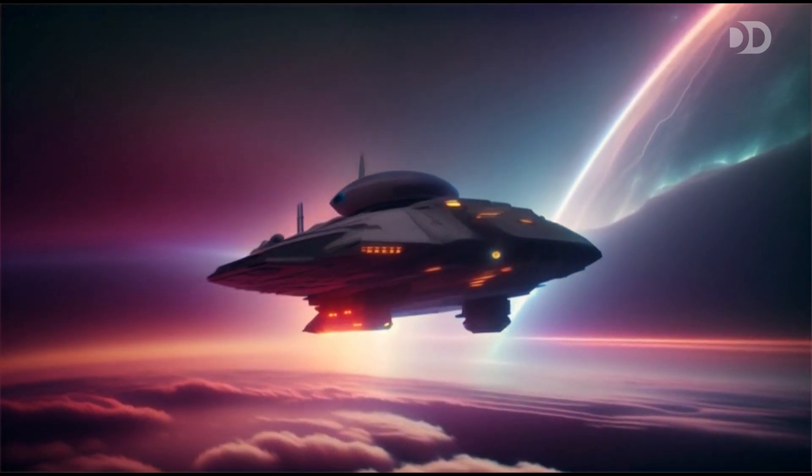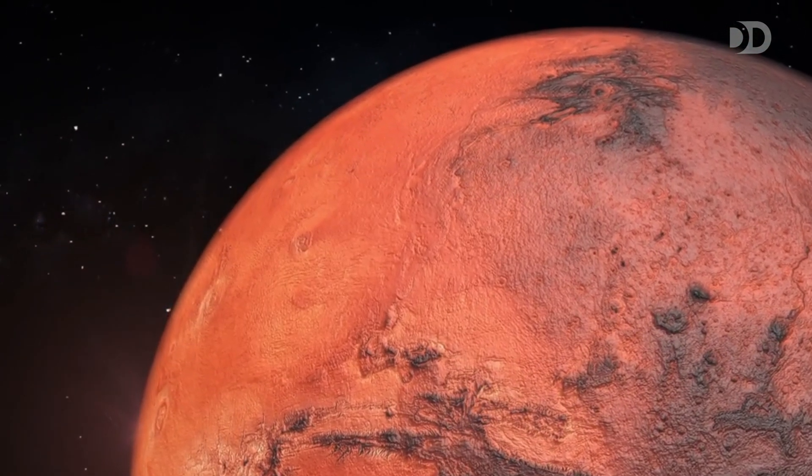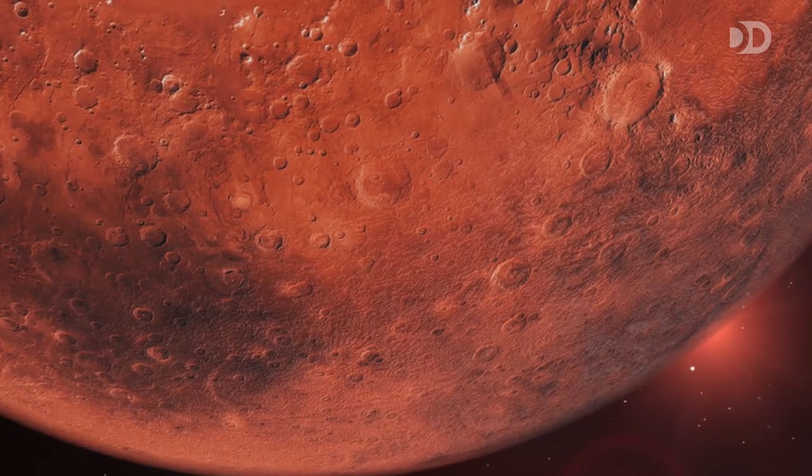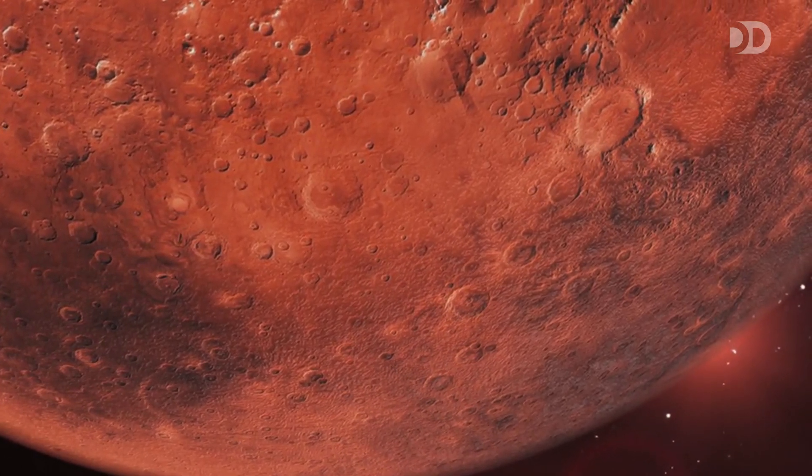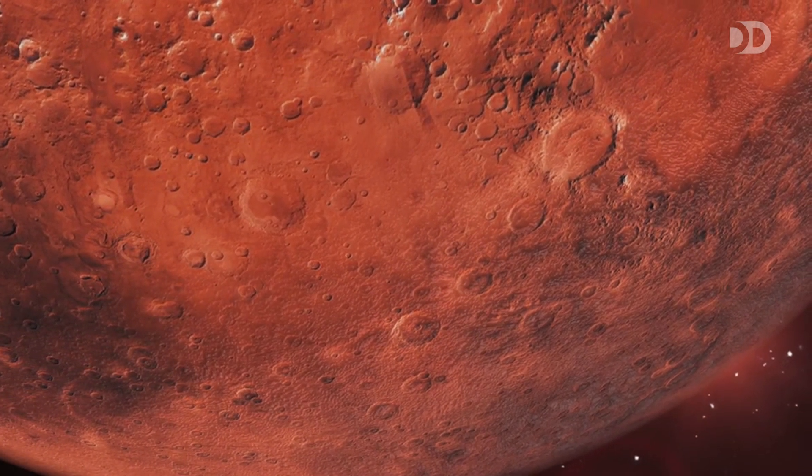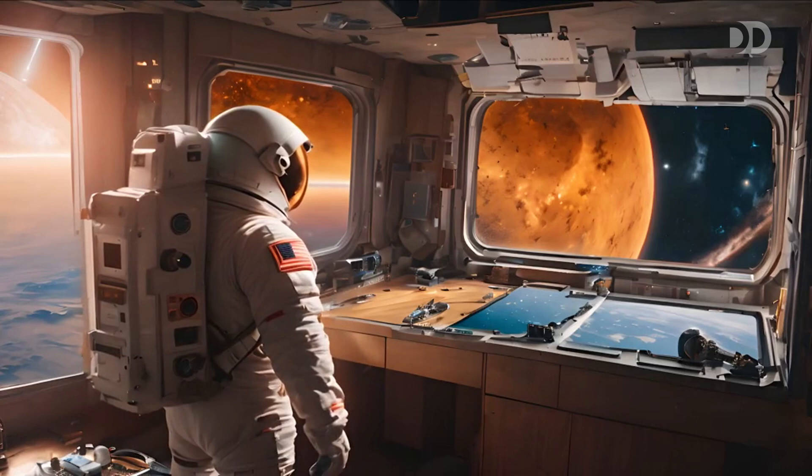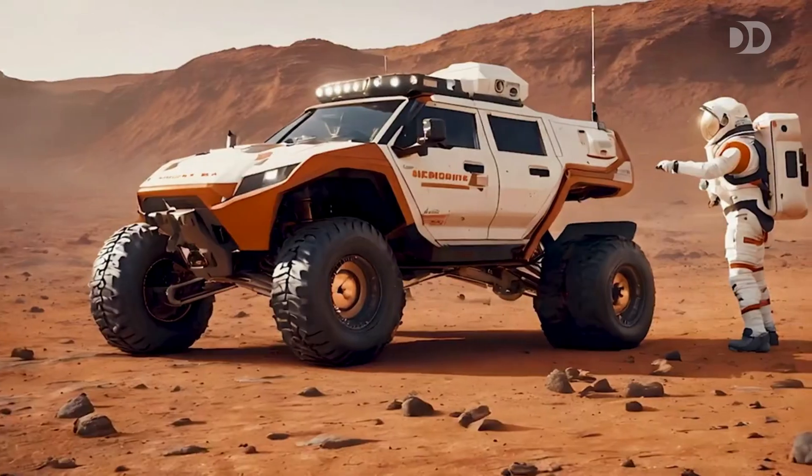Our voyage now takes us to Mars, the red planet that has long captured our imagination. Its rusty surface shaped by ancient volcanoes and canyons hints at a watery past. Though now cold and arid, Mars may still hide secrets of past life beneath its surface. Robotic missions and future human explorers aim to unlock its mysteries. Perhaps one day, we'll leave footprints in the Martian dust.